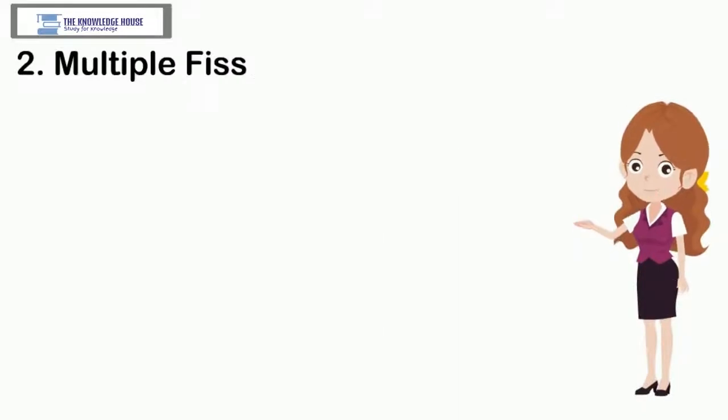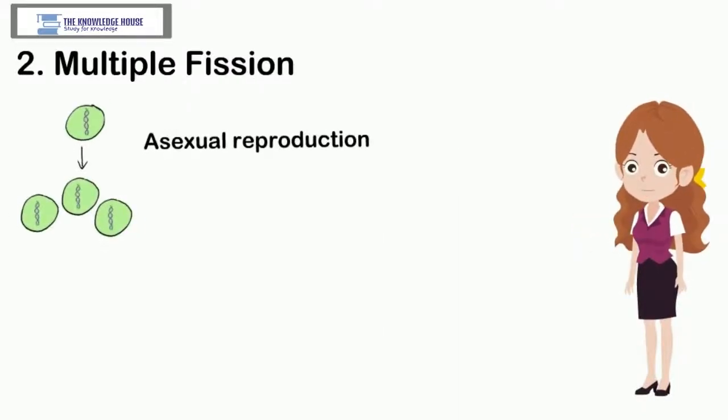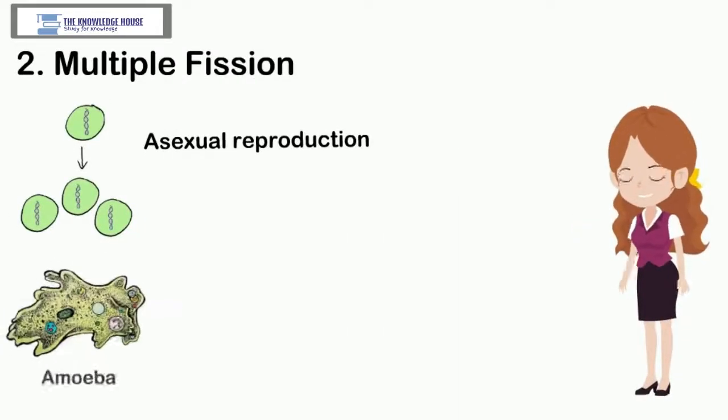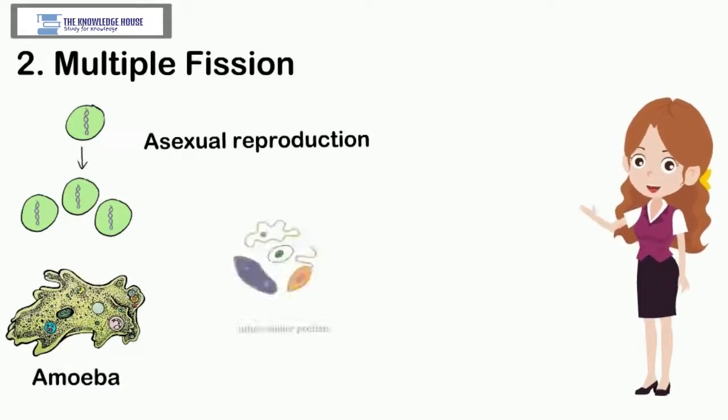2. Multiple fission. Asexual reproduction by multiple fission is performed by amoeba and other similar protists.